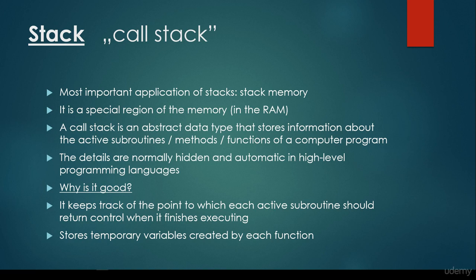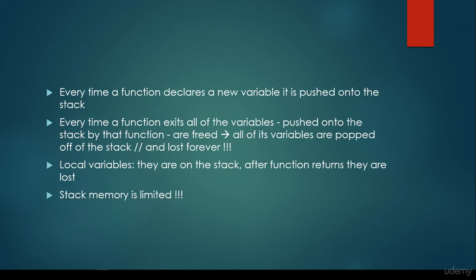Local variables are going to be stored on the stack. Every time a function declares a new variable, it is pushed onto the stack — whether it is a reference type, for example in Java, or a primitive type. And every time a function exits, all of the variables pushed onto the stack by that function are freed. The stack is going to get rid of these variables.